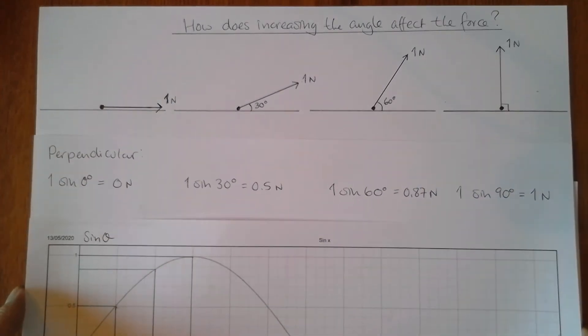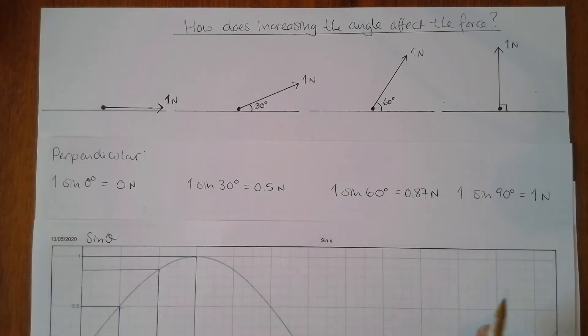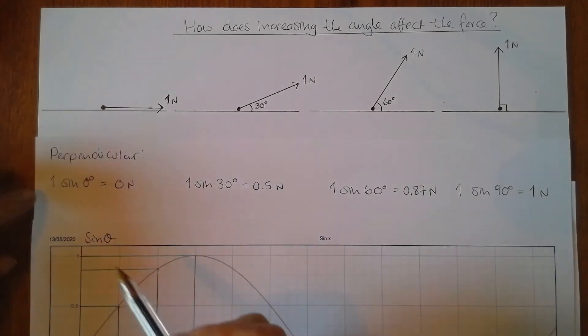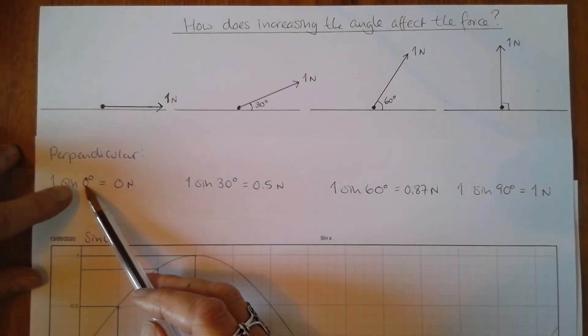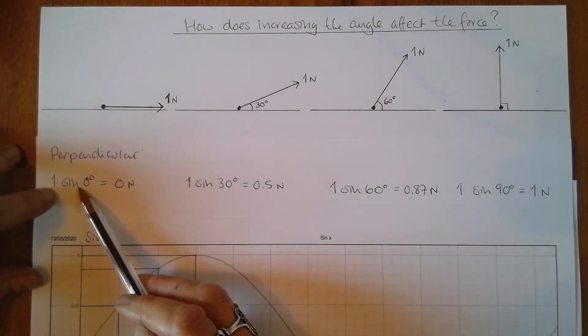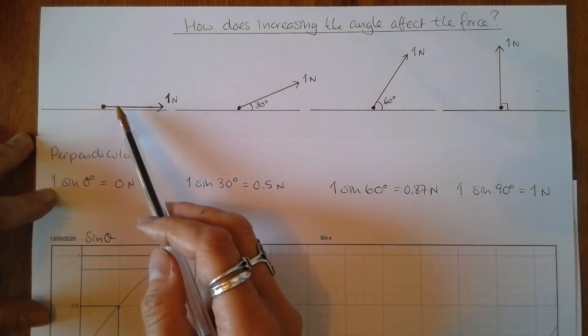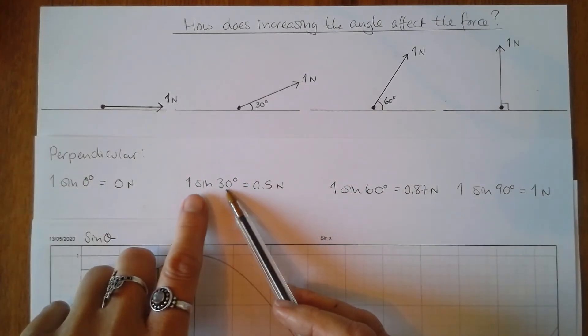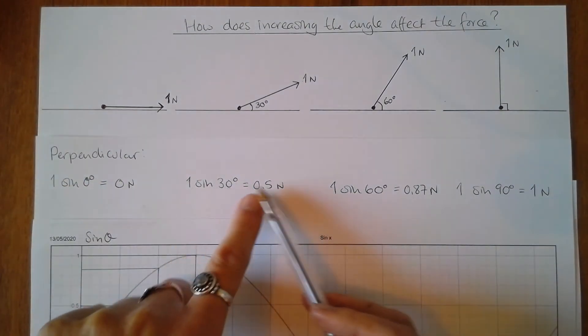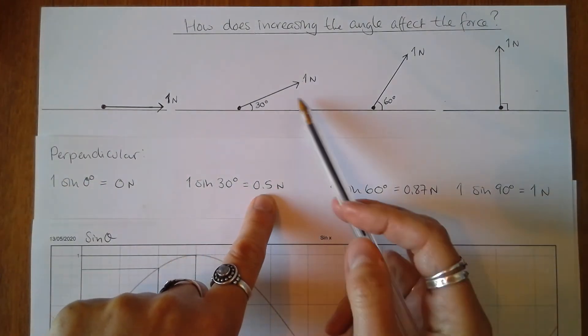And sine of zero is zero, so one times sine zero is zero and the angle between them is zero. One sine 30 is 0.5, so now I have a small component acting in the vertical direction.